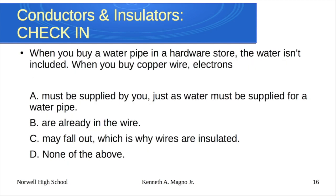So a quick little check-in here. When you buy a water pipe at the hardware store, there's no water included in the pipe. But when you buy copper wire, the electrons, A, must be supplied by you, just as the water must be supplied for the water pipe. B, they're already in the wire. C, they may fall out, which is why we insulate all wires. Or D, none of the above.